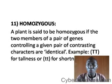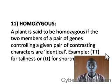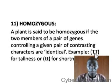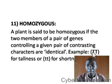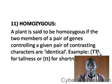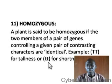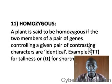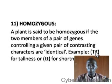A plant is said to be homozygous if the two member characters of a pair of genes controlling a given pair of contrasting characters are identical. For example, capital T capital T stands for tallness — the two alleles are the same, so that is homozygous for tallness. Similarly, small t small t — the two alleles are also the same — so that is homozygous for shortness.